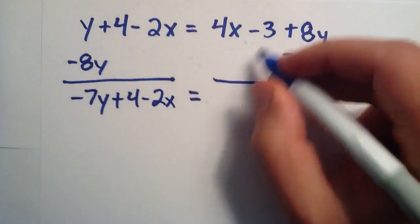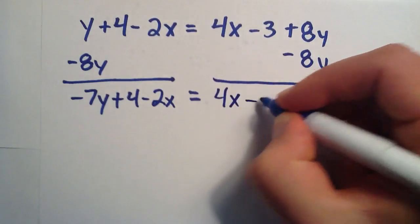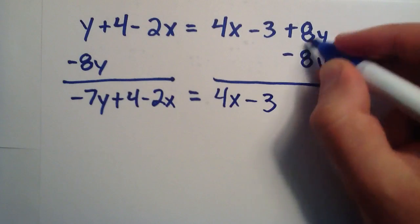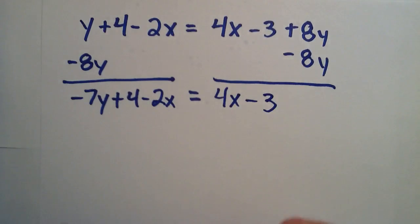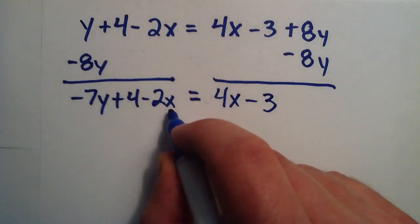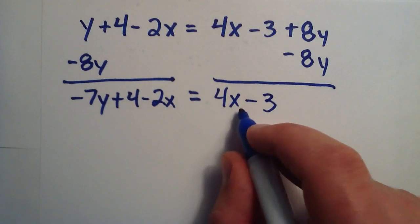And once again, the x's and the numbers didn't change, so we just rewrite those. And a positive eight y and a negative eight y simply give us zero. So now we have all the y's on the left hand side, which is good, but we still have some numbers and some x's over here. So we need to move those to the other side. So the way we do that is we just take away all the numbers here.